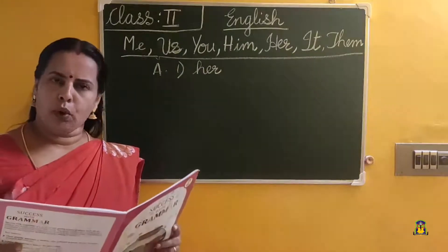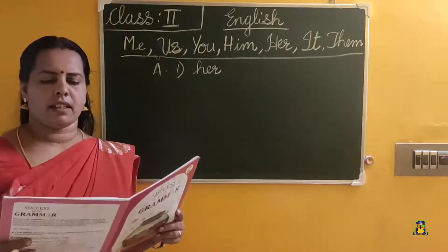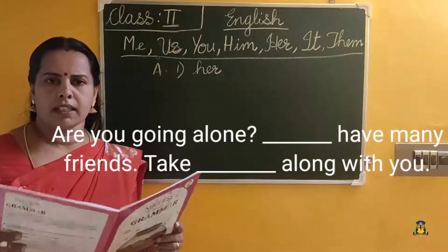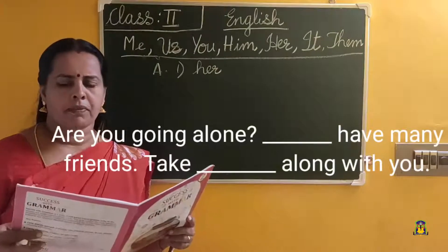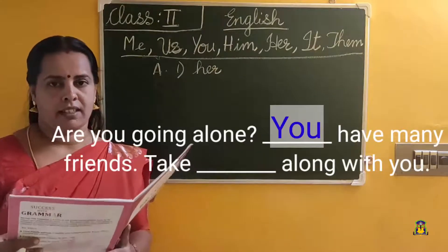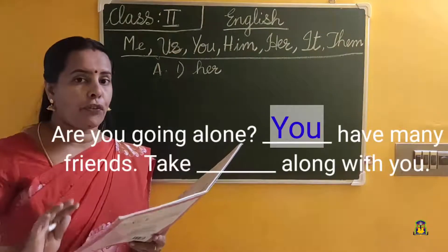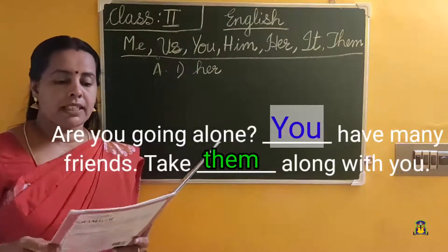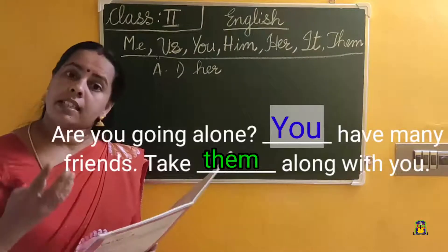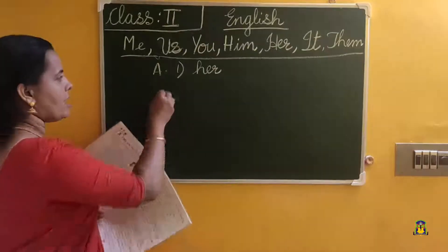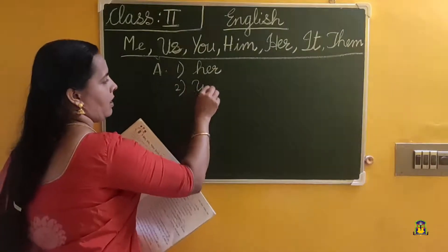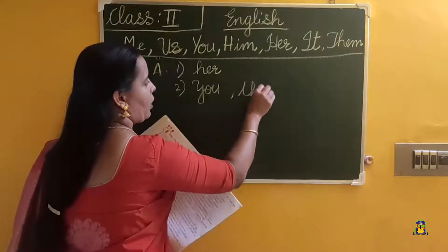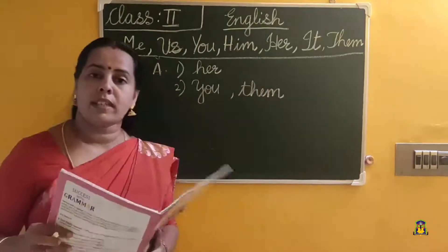Second one: Are you going out? You have many friends. Take dash along with you. So somebody is asking you — you have many friends. Instead of friends, we use them, because friends is plural. Take them along with you. So the second answers are: you with a capital Y at the beginning of the sentence, and in the second blank, them. Instead of friends we are using them — friends means they, so them.